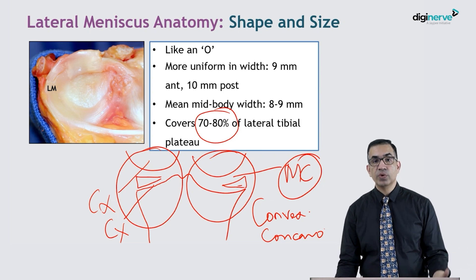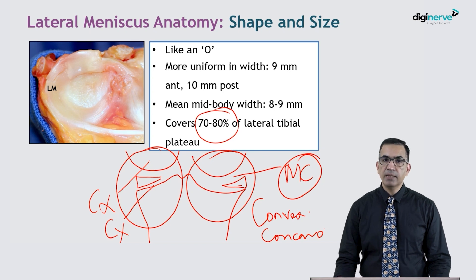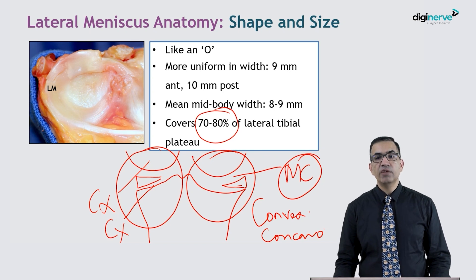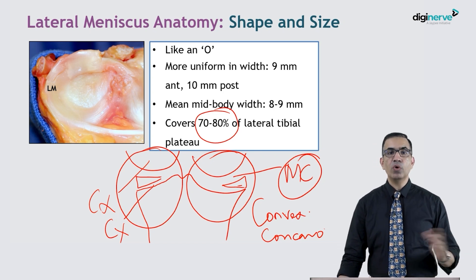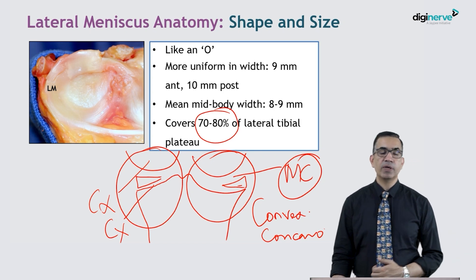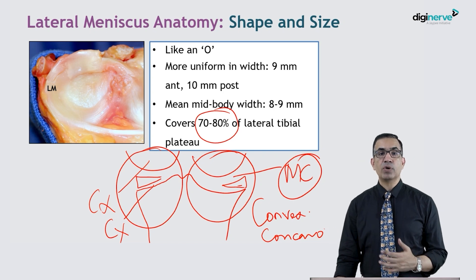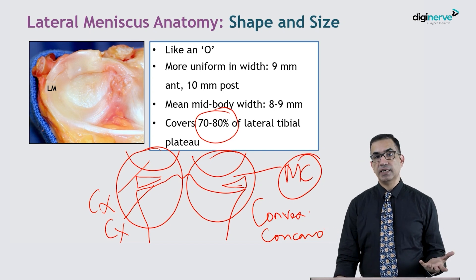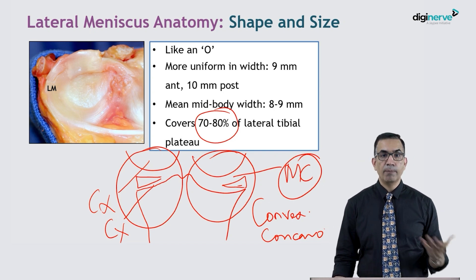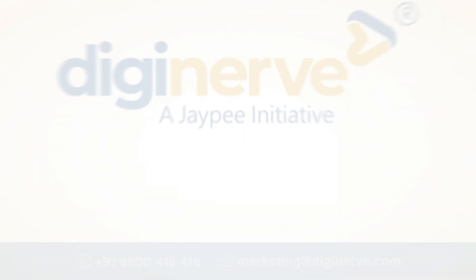The medial side of the joint is already more congruous, so the lateral meniscus is more important for stability of the lateral side. Therefore, whenever there is a lateral meniscus tear compared to a medial meniscus tear, we always try to save more of the lateral meniscus, because it provides relatively more stability to the lateral compartment.